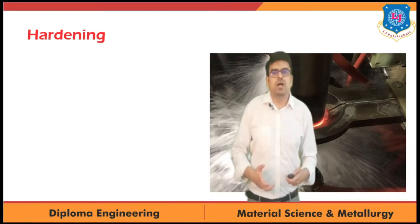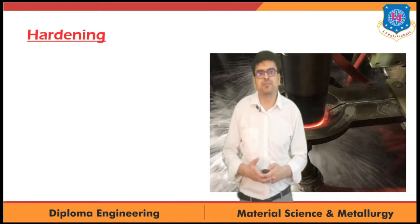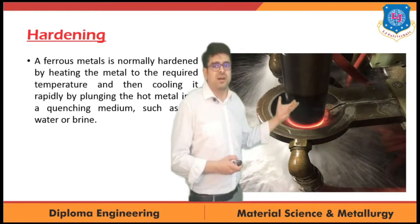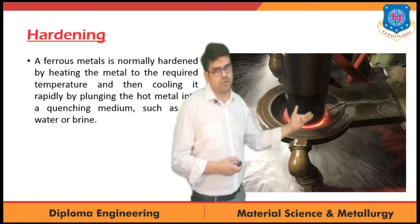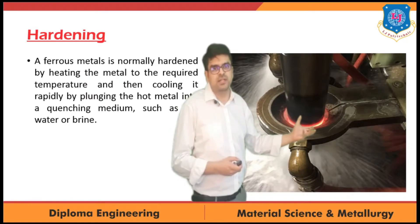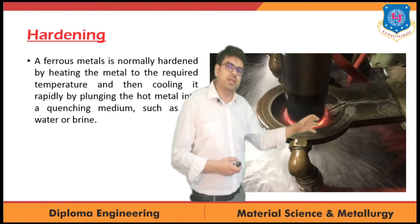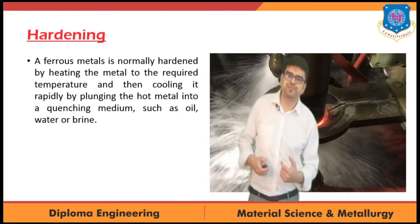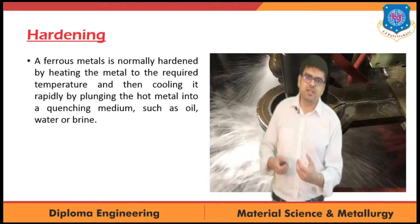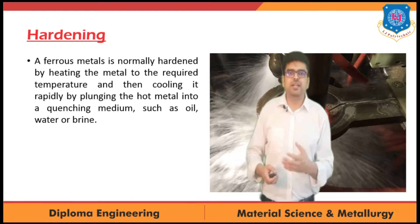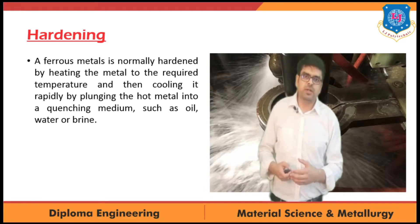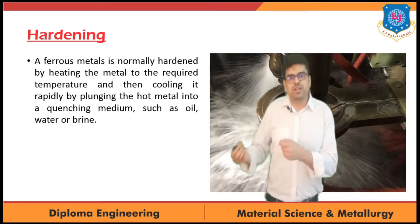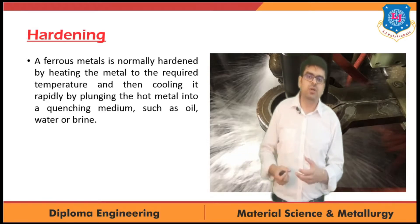Now let's talk about the hardening process. As we can see in this image, first we heat the product to a certain temperature and then rapidly cool it down with the help of water, oil, or drying powder. A ferrous metal is normally hardened by heating it to the required temperature and then cooling it rapidly by plunging the hot metal into a quenching medium such as oil, water, or brine powder.